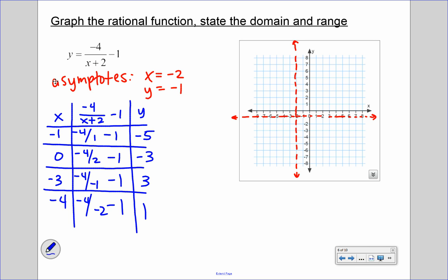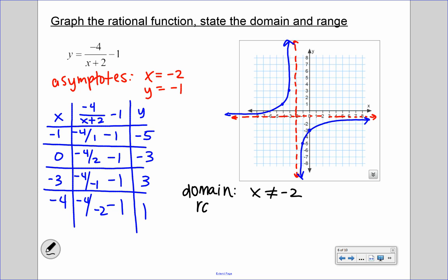Plugging those in, we get points (negative 1, negative 5), (0, negative 3), (negative 3, 3), and (negative 4, 1). We plot these and draw both branches of the hyperbola. Our domain is x cannot equal negative 2, and our range is y cannot equal negative 1. That's how you graph a rational function: find your asymptotes, build your table of values, then plot.